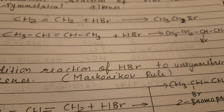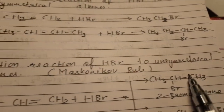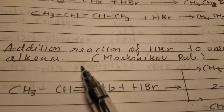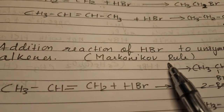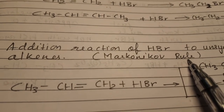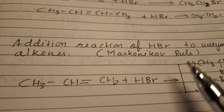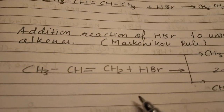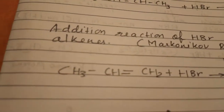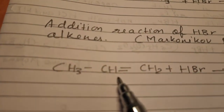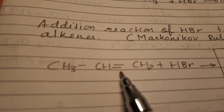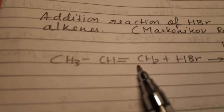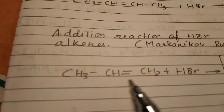That compound is 2-bromobutane (positions 1-2-3-4). Now, when the addition reaction of HBr occurs with an unsymmetrical alkene, Markovnikov's rule is applied. Markovnikov was a scientist who, after different types of studies, found that for asymmetrical alkenes — where both sides of the double bond have unequal numbers of carbon and hydrogen atoms — a specific rule governs the product.